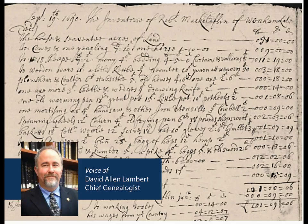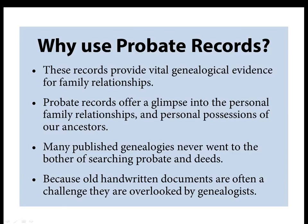Before I go into what holdings NEHGS has at the library in Boston and what we have online on AmericanAncestors.org, I'd like to talk a little bit about probate records, because most people think of just last wills and testaments. These records are often used to provide vital genealogical evidence for family relationships. In many cases they offer the only evidence to connect a parent with their child, or even give a connection back to England. Maybe a person came over to New England early on and in their probate mentions leaving something to a brother now living in London.